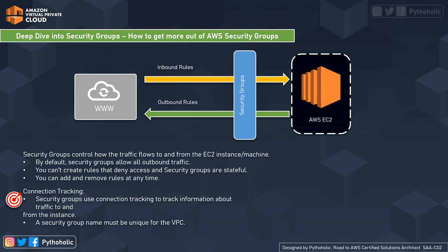You need to remember that you can't create rules that deny access. If you wish to block SSH, simply don't add a rule that allows it. If you wish to have HTTP access, allow port 80 as part of the security group. There are no restrictions — you can add or remove rules at any time.